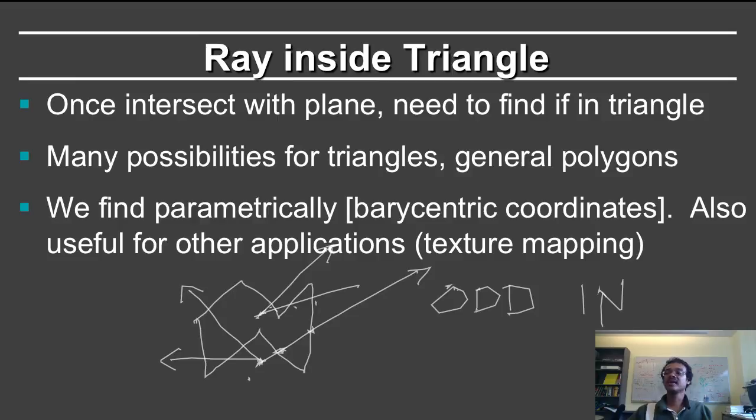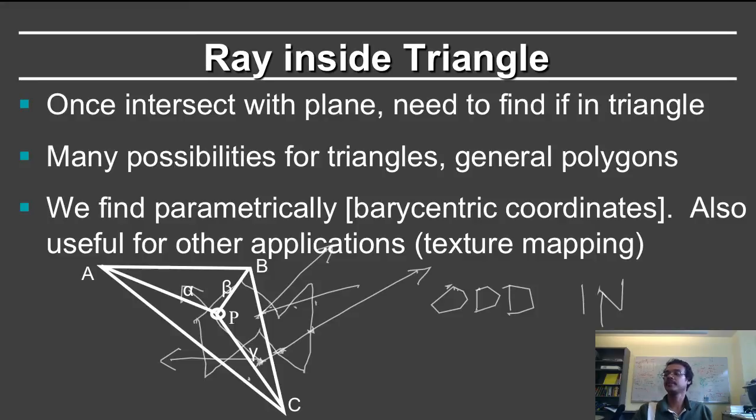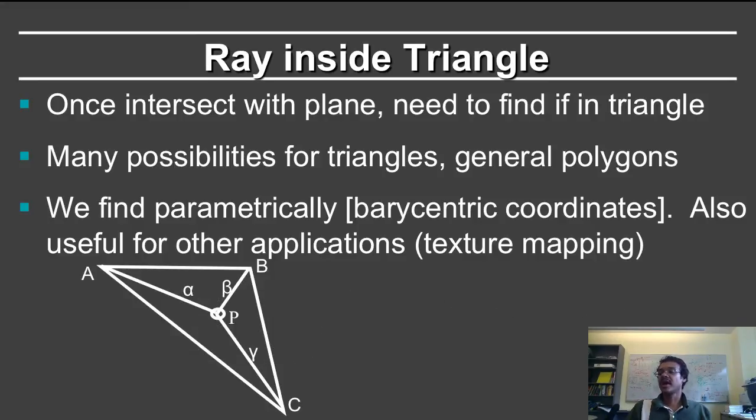However, for the case of triangles, we actually find the intersection parametrically, using what are known as barycentric coordinates with respect to the triangle vertices. This is useful in a number of other applications, such as texture mapping. If I show the triangle here,